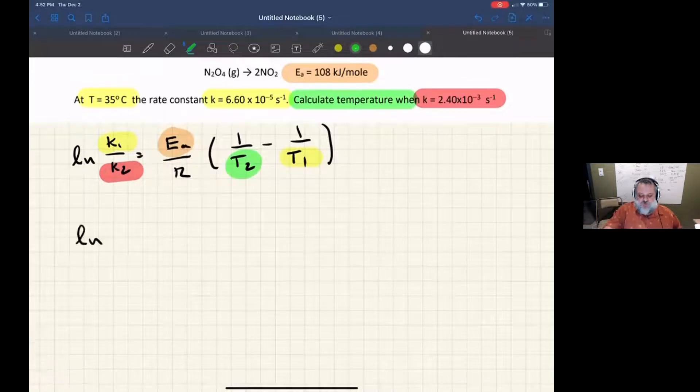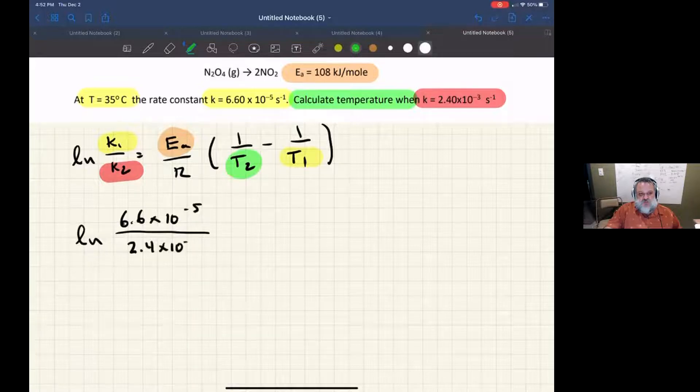But from this point, it really is just turn the crank and fill in the blanks. So I'm going to put my two rate constants there. K1, 6.6 times 10 to the negative fifth. K2, 2.4 times 10 to the negative three.